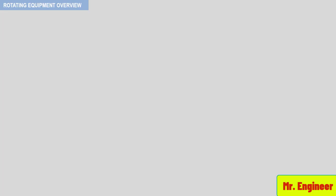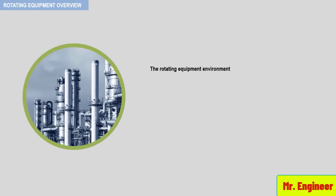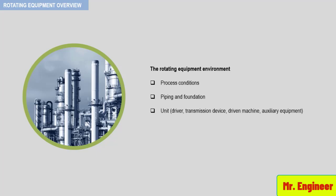Before discussing specific facts concerning all the rotating equipment, some important concepts need to be presented. The environment or surroundings for any piece of rotating equipment play an important part in determining the availability of that particular item. The rotating equipment environment is the process unit in which the equipment is installed. Proper design of process conditions, piping and foundations, selection of drivers, transmission devices and auxiliaries, and specification of ambient conditions must all be considered.